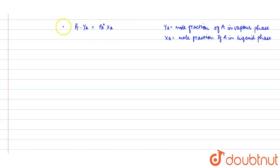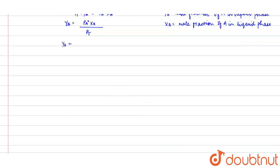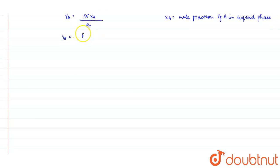So here we can write Y_A = P_A° X_A / P_t, and the expression of P_t from equation 1, we can write P_A° X_A divided by P_B° + (P_A° - P_B°) × X_A.